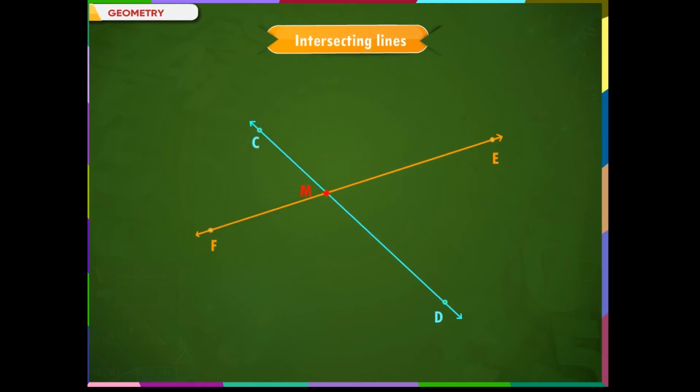Let us observe the two lines in the screen. The two lines CD and EF are crossing each other at a point M. Such lines crossing each other are called intersecting lines. The point of intersection is also named with a capital letter.